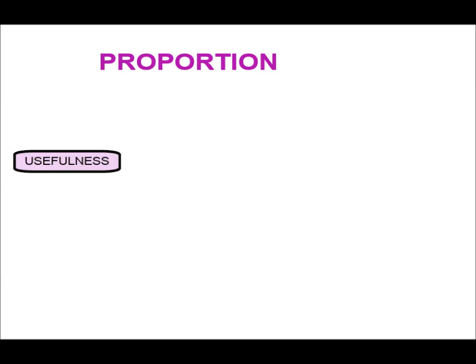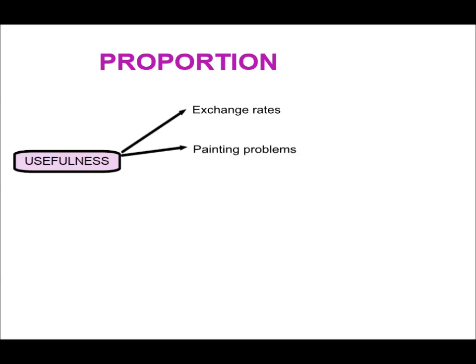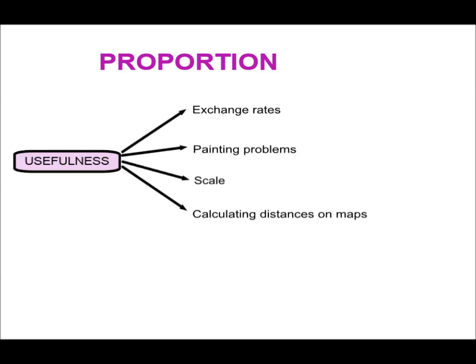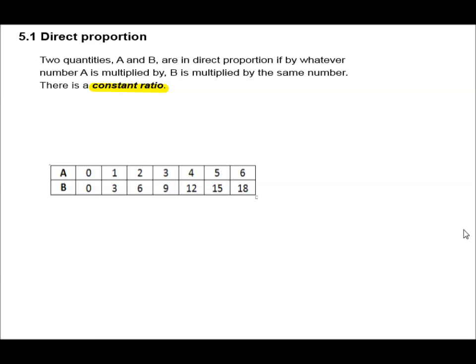Welcome back to Grade 10 Mathematical Literacy. Today we're dealing with proportion, found on page 32 of your textbook. Proportion is an important concept because it is useful when we deal with exchange rates, painting problems, and calculating distances on maps using scale. This is direct proportion.